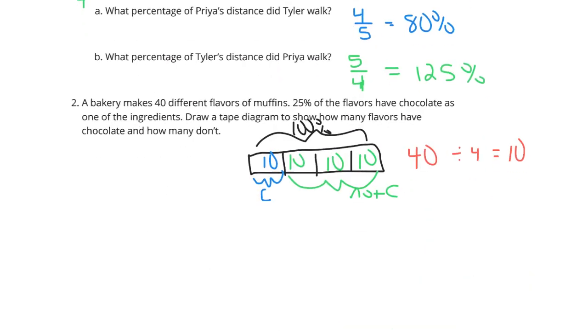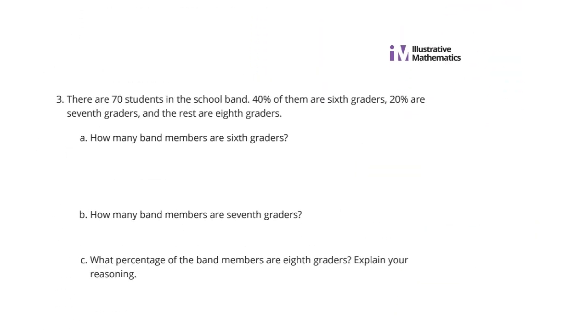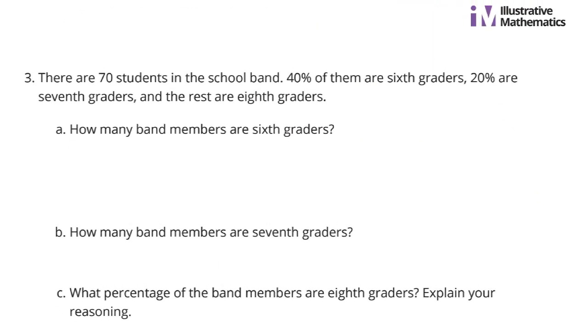Let's continue on to question three. There are 70 students in the school band. 40% of them are sixth graders. 20% are seventh graders, and the rest are eighth graders. Well, 40% are sixth, 20% are seventh. That adds up to 60%, which leaves 40% for the eighth grade.